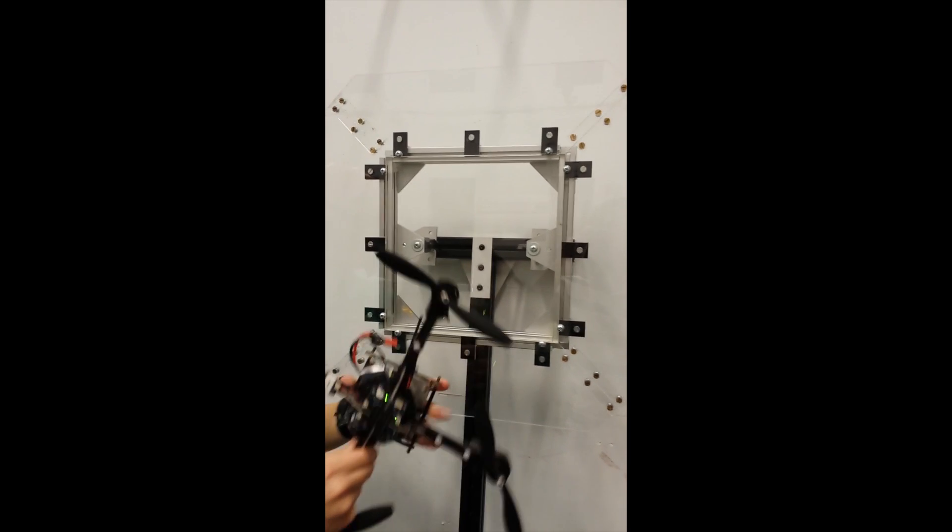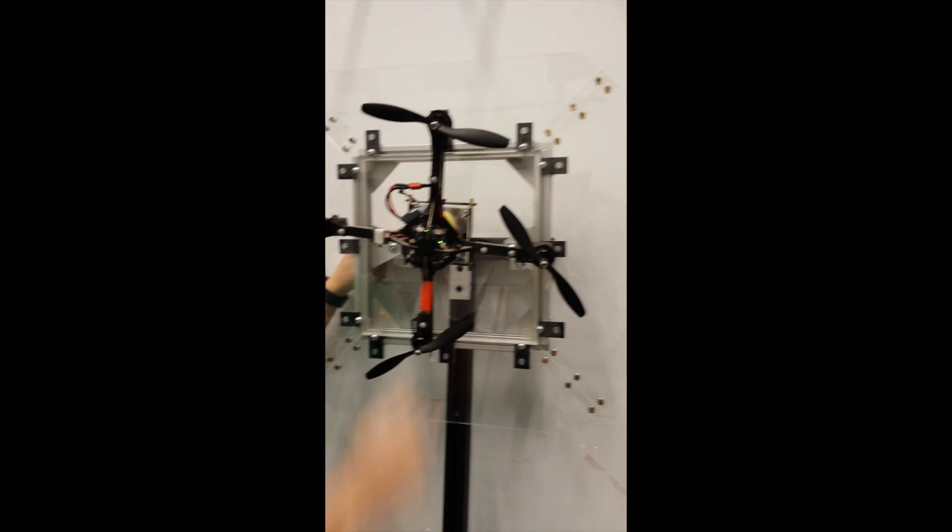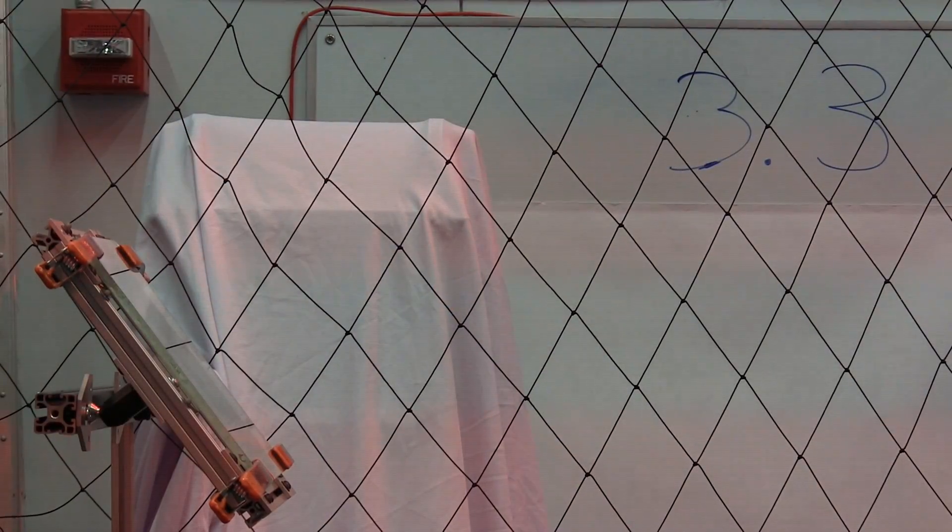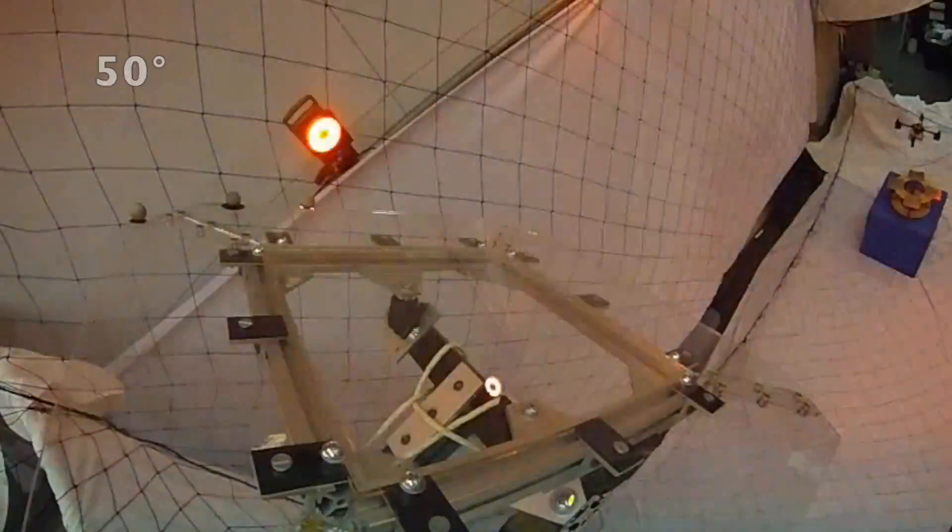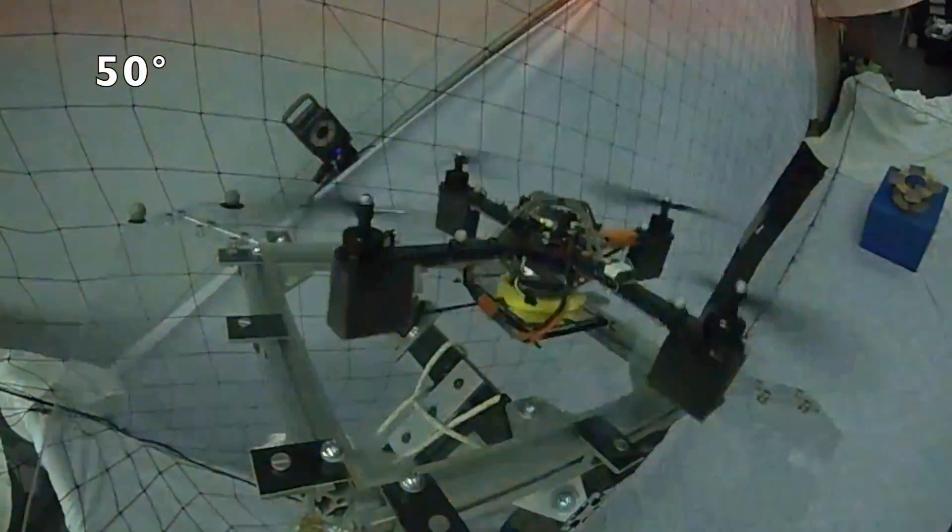When set and triggered, the mechanism allows the gripper to be adhesive. To achieve a successful perch, it is important to regulate the position, orientation, angular rates, and velocity of the robot at impact.